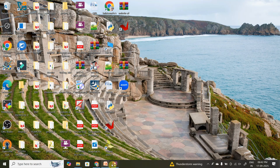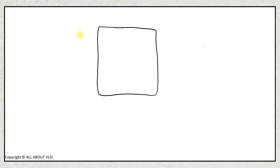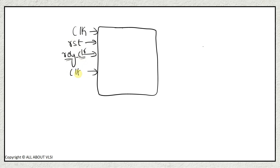Let us first look at the block diagram of the UART receiver module. This is my UART receiver block diagram where it has signals like clock, which is a reference clock, a reset signal, a ready_clear signal — which basically makes the ready signal zero — and a clock enable signal. This clock enable signal we are getting from the baud rate generator module, which was giving the TX_enable and RX_enable signals. The receiver enable signal is given by the baud rate generator. We also have outputs: ready and data output, and one more input which is RX.